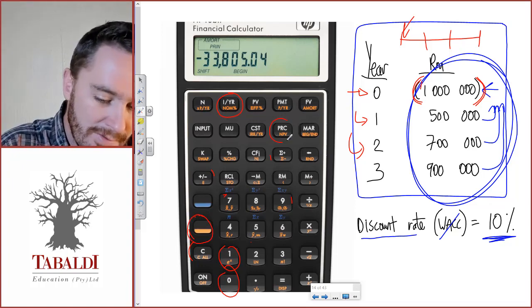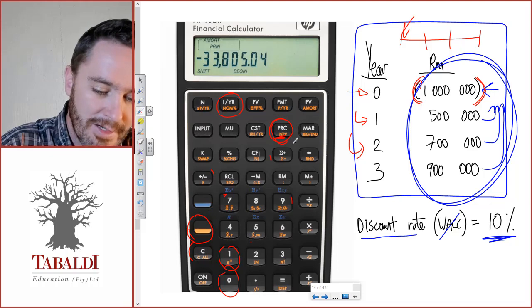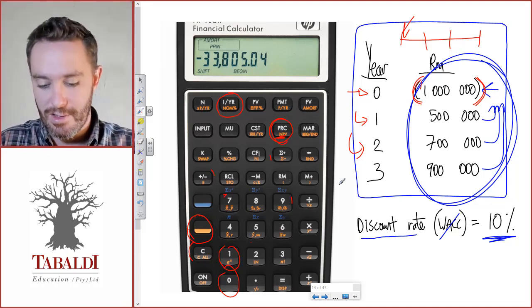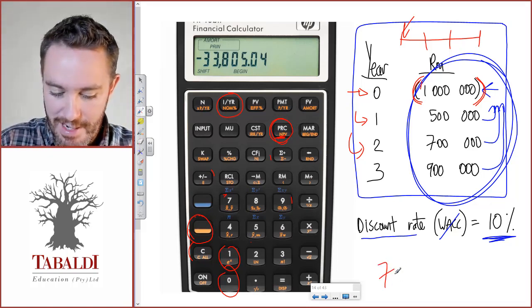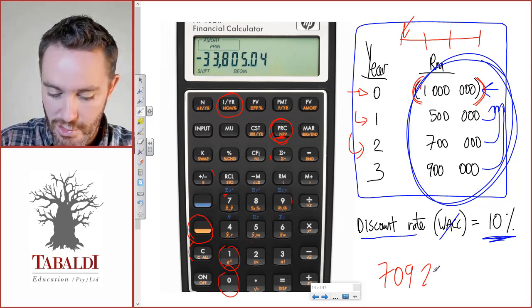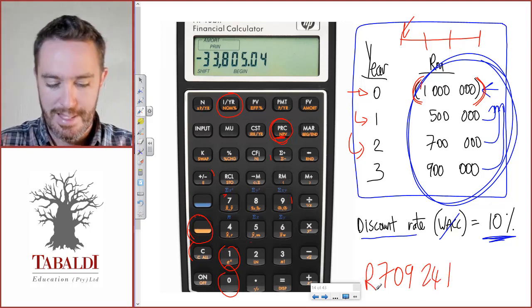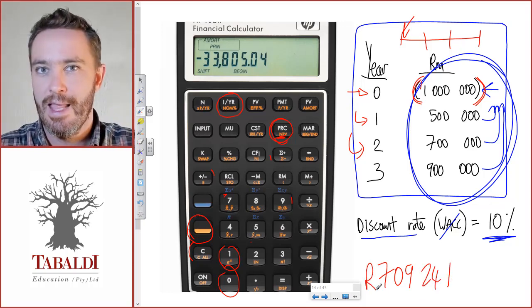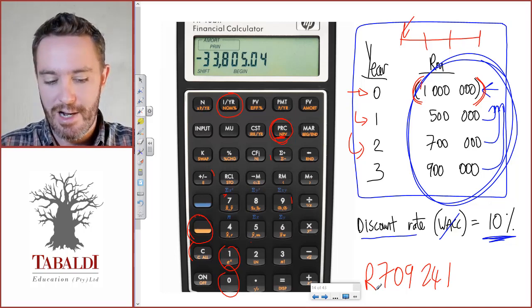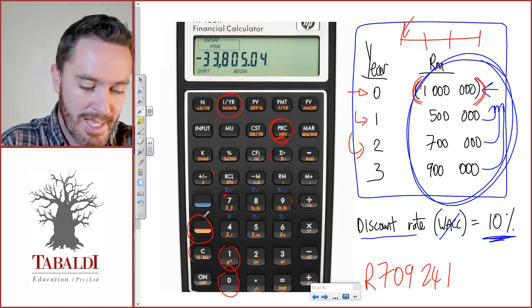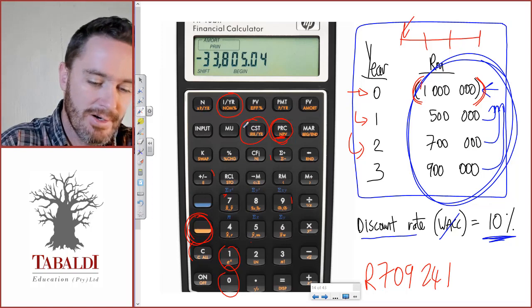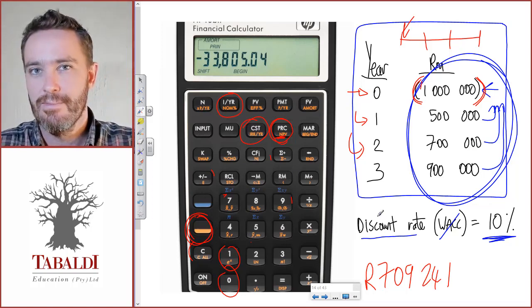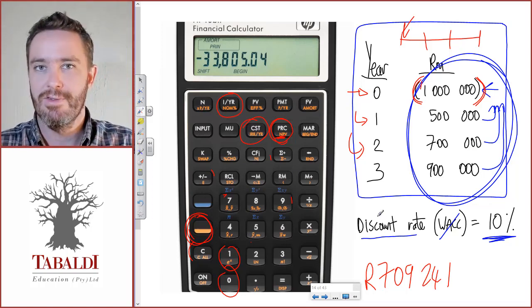Immediately after that, press shift and then net present value. It'll pop up the answer on the screen: 709,241 Rand—that's our net present value. One step further to get our internal rate of return: press shift and then IRR next to it, since we've already got the cash flows in there.